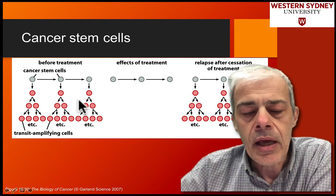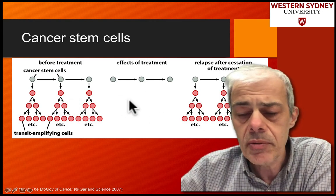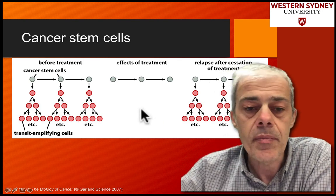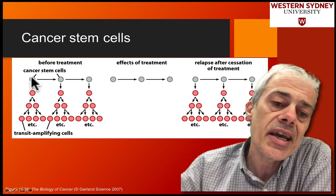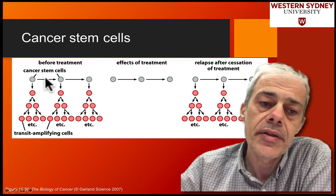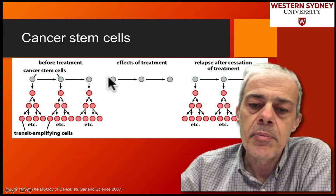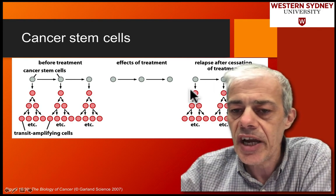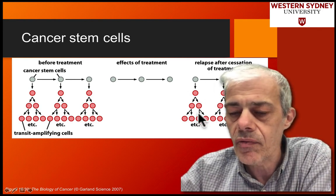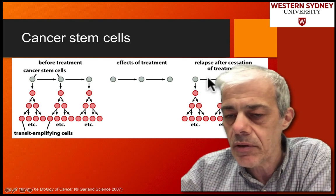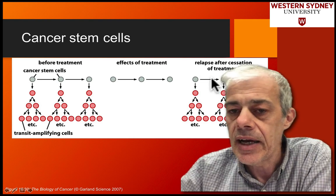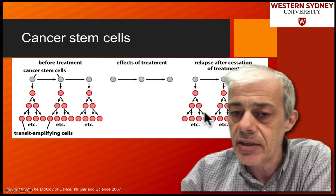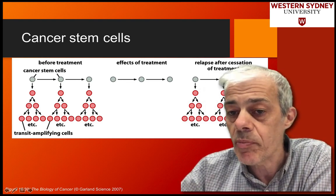So it effectively looked like the treatment was good, but actually it came straight back. Conversely, you might have a drug that manages to get in and kill these cancer stem cells. But because these cells are in a small amount, you don't see much change in the overall effect of the drug because you've only killed a small population of cells, and it takes a while before these transiently amplified cells naturally disappear — but then they're not replaced.